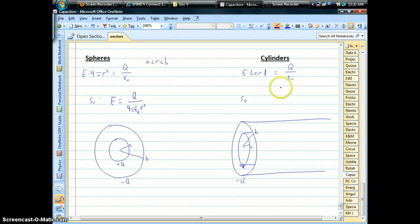Q over four pi epsilon r squared. And for cylinders, the only thing that changes is the surface area, but same idea. Electric field of the gap, it's going to be whatever the charge on the inner cylinder is divided by two pi epsilon of the length and little r.